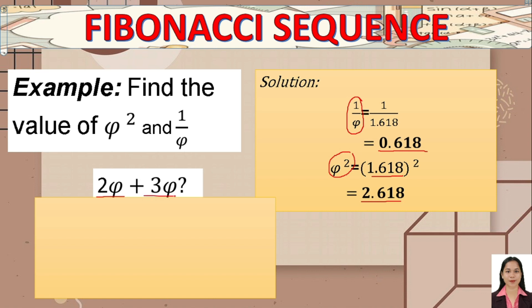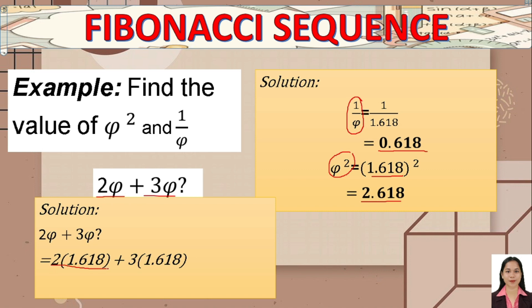For the expression 2 phi plus 3 phi, substitute 1.618 for phi: 2 times 1.618 plus 3 times 1.618 equals 8.09.